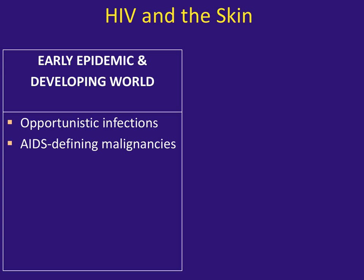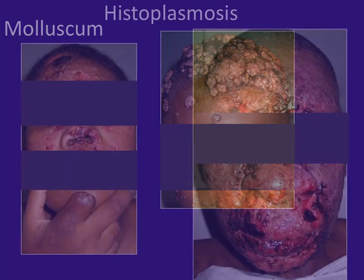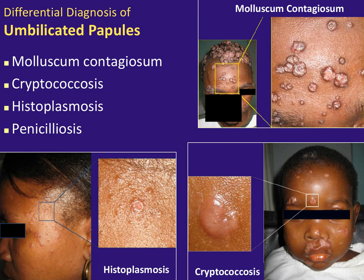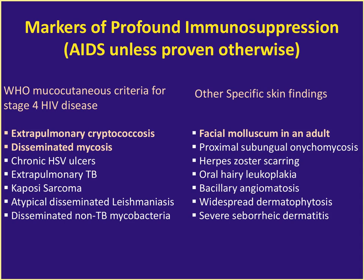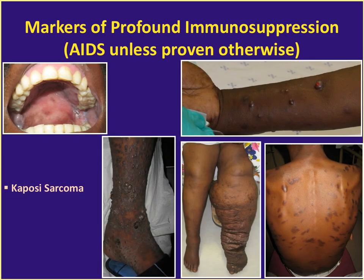Last time we did a whirlwind tour of all of HIV and the skin in the early epidemic or in the developing world — for patients not on ART — in 15 minutes. We talked about opportunistic infections and AIDS-defining malignancies, giant facial molluscum, disseminated histoplasmosis, the differential diagnosis for umbilicated papules, severe seborrheic dermatitis, widespread tinea corporis, and other dermatophytoses. Then we looked at Kaposi's sarcoma, which we're going to revisit during this four-part series.